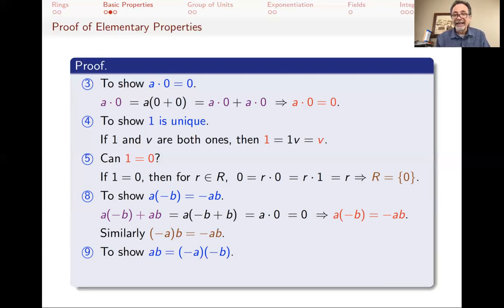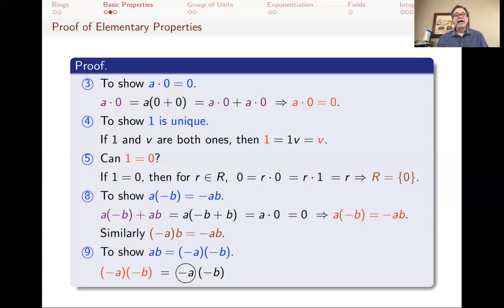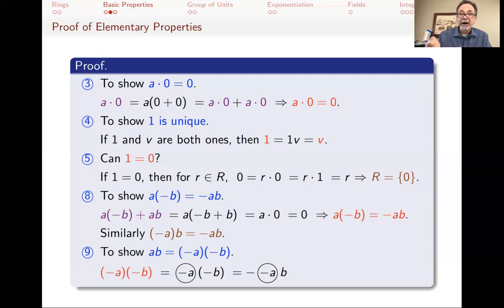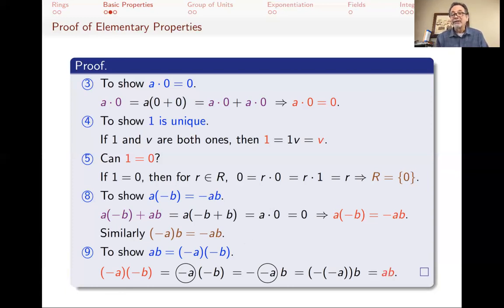To prove ab equals (minus a) times (minus b): we compute (minus a) times (minus b). Thinking of minus a as one element and applying what we proved, we can bring the minus from minus b up front: this equals minus of (minus a) times b. Then we can bring that minus inside to get minus(minus a) times b, and since minus(minus a) equals a, we get ab.